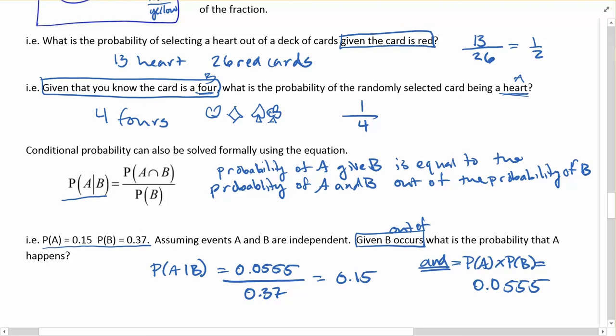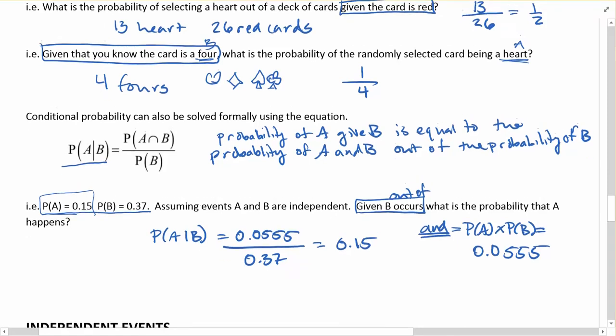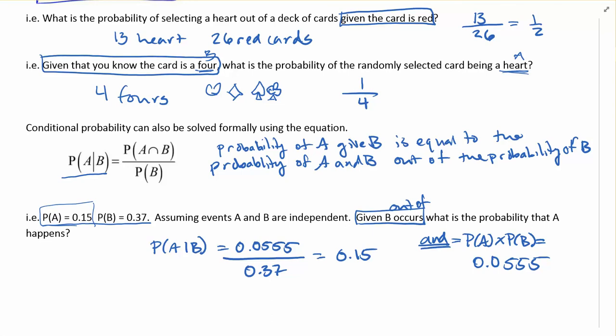So not that exciting of a problem, because if they're independent, they should have no influence on each other, and that's kind of the trick here. But even if that wasn't the trick, you would still use this formula exactly the way we've done it. So that comes up sometimes, but more importantly, just that you know how to use the formula.